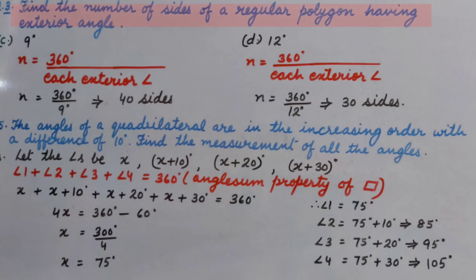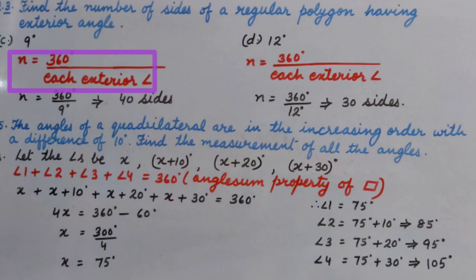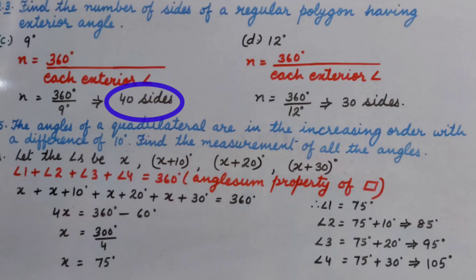Question number 3: Find the number of sides of a regular polygon having exterior angle — Part C — 9 degrees. As we know, each exterior angle equals 360 degrees divided by N. By transposing, we get N equals 360 degrees divided by each exterior angle, that is 360 divided by 9 degrees. So there are 40 sides in this polygon.